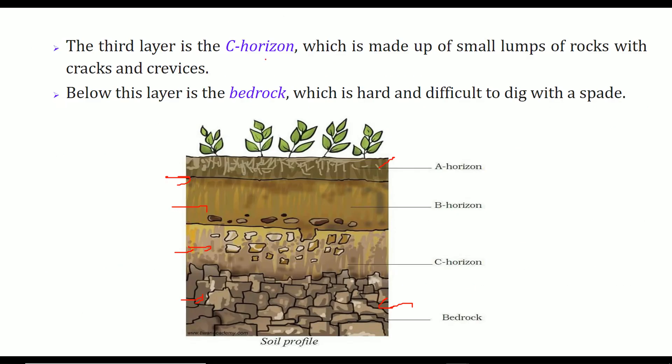The third layer is C horizon which is made up of very small lumps of rocks which has cracks and crevices. Then we have bedrock that is the fourth one and this is hard and difficult to dig with speed because it contains lot of rocks.